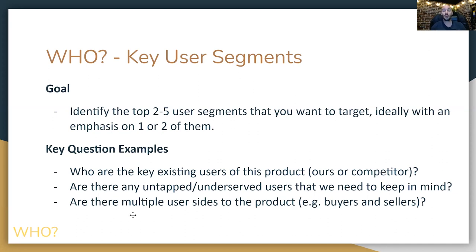Are there multiple user sides to a product? For marketplaces, you have buyers and sellers — people listing things on Amazon and people buying. For Uber, you have riders and drivers, and you want to make sure you can serve both. For your desired thing that you're building, you should have no trouble getting to five, six, or seven user segments. The difficulty is honestly bringing it down to focus on one or two.